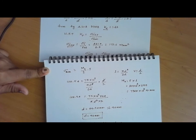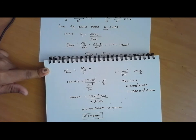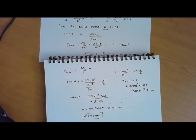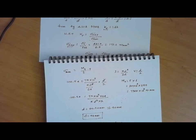Now the fillet radius is given as 0.1 times D. So fillet radius = 0.1 × 90 mm = 9 mm. Therefore, the fillet radius is 9 mm.